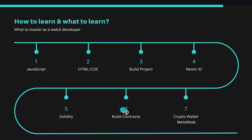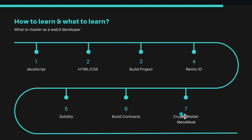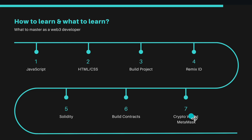Build at least 10 to 15 contracts, then start learning about the MetaMask wallet. You'll automatically learn MetaMask when you start using Remix IDE, but you need to learn how to add a custom network and custom protocol — this won't take more than an hour or two. So these are the seven things to master first: JavaScript, HTML/CSS, build a project, Remix IDE, Solidity, build contracts, and then the MetaMask crypto wallet.